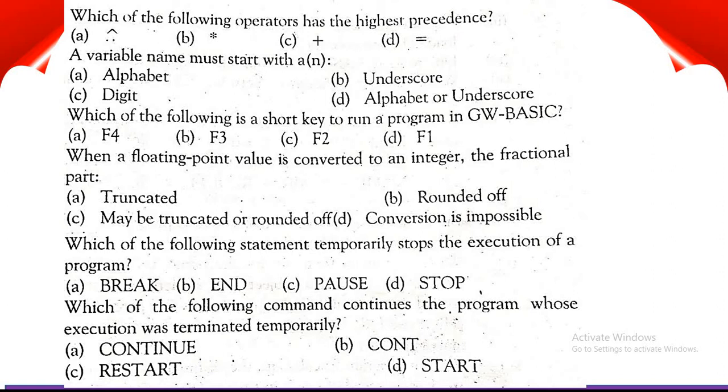Next MCQ is: Which of the following is the shortcut key to run a program in GW-BASIC? Option A F4, option B F3, option C F2 and option D F1. The correct option is option C F2.